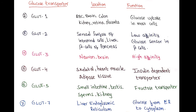GLUT3 is mainly present in neurons and the brain. It has high affinity, meaning even at low concentrations of glucose, this transporter can transport glucose into the tissues. GLUT4 is present in skeletal muscle, heart muscle, and adipose tissue. Its significance is that it is an insulin-dependent transporter — insulin mediates the expression of these transporters in skeletal muscle, heart muscle, and adipose tissue, and only then can glucose be transported into those tissues.